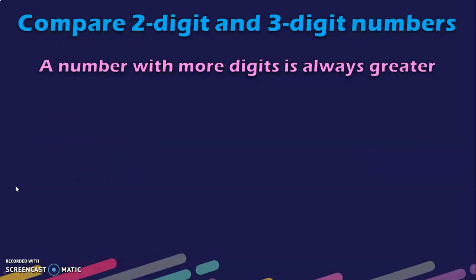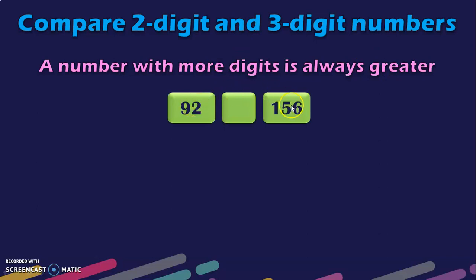Now that we have seen the comparison of two 2-digit numbers, we are going to see comparison of a 2-digit number and a 3-digit number. The simple rule is: a number with more digits is always greater. A 3-digit number is always greater than a 2-digit number, or a 2-digit number is always greater than a single-digit number. Here we have 92 and 156, and we know that 92 is lesser than 156. So you put the lesser than symbol.